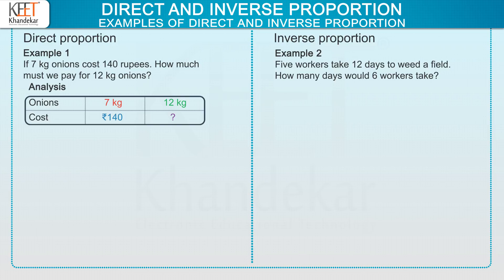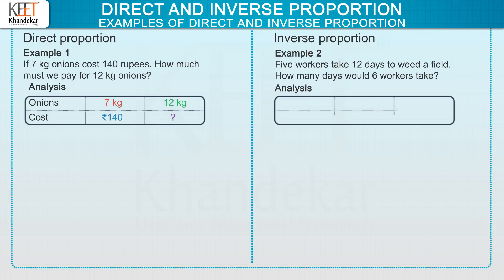Now let us analyze the second example. Here, 5 workers complete the work in 12 days. So write 5 and 12 in the table as shown on the screen. Here we are supposed to find the number of days taken by 6 workers, so write 6 and a question mark as shown on the screen.